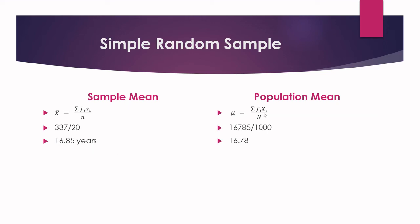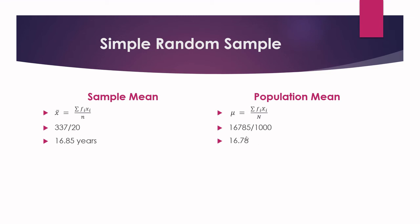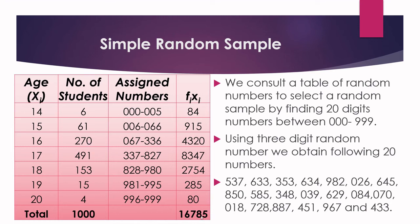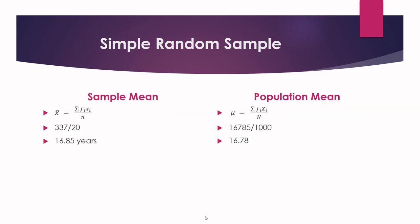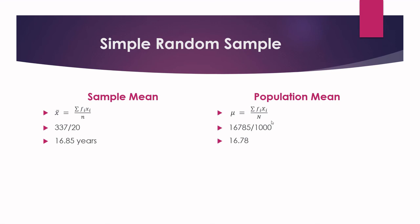The population mean μ = ΣfᵢXᵢ / N. Here fᵢ is the number of students and Xᵢ is the age: 14 × 6 = 84, 15 × 61 = 915, and so on. The sum of fᵢXᵢ is 16,785, divided by the total population N = 1000, giving μ = 16.78. As you can see, the sample mean of 16.85 is very close to the population mean of 16.78, which means simple random sampling using a random number table works.